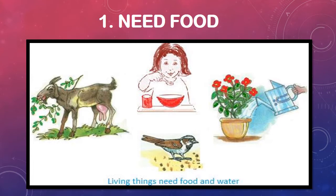Animals also take their food from plants. Plants make their own food. So all living things — humans, animals, and plants — obtain or produce food in some way, which is essential for their survival.